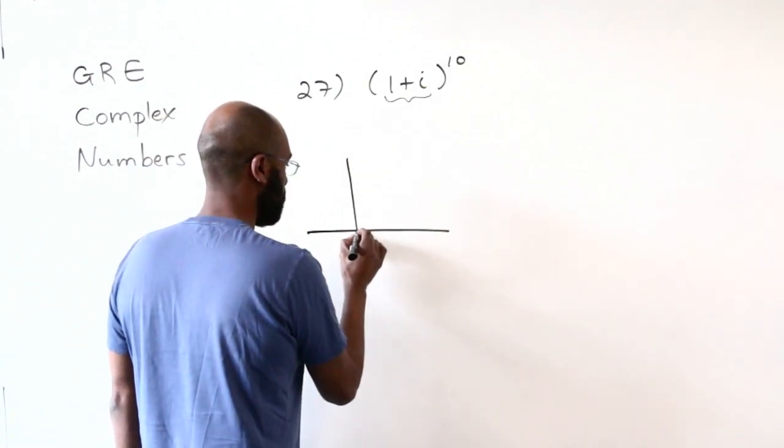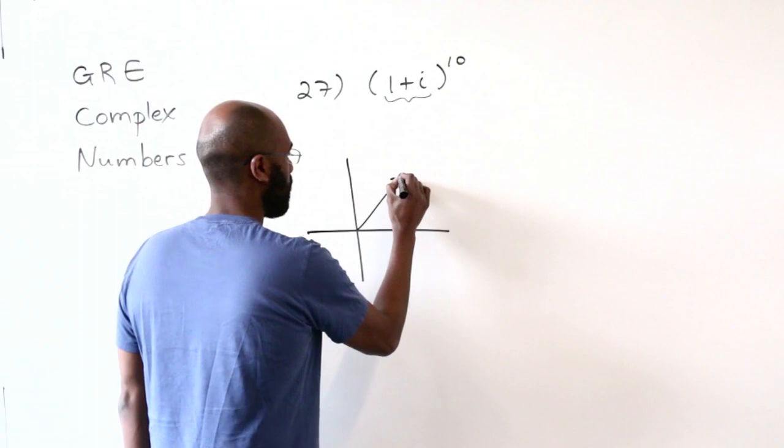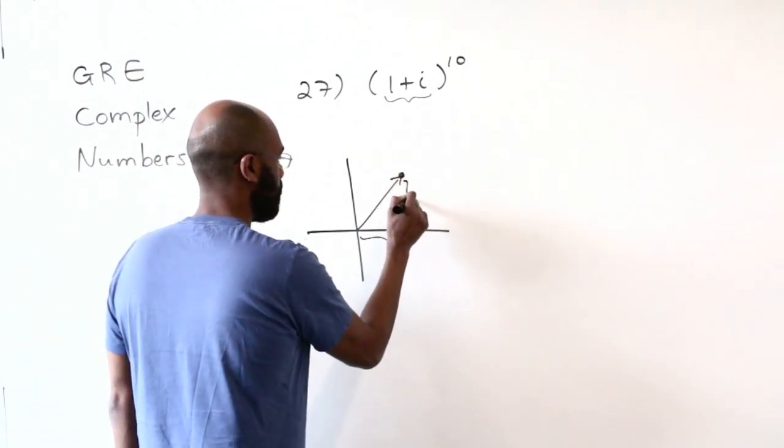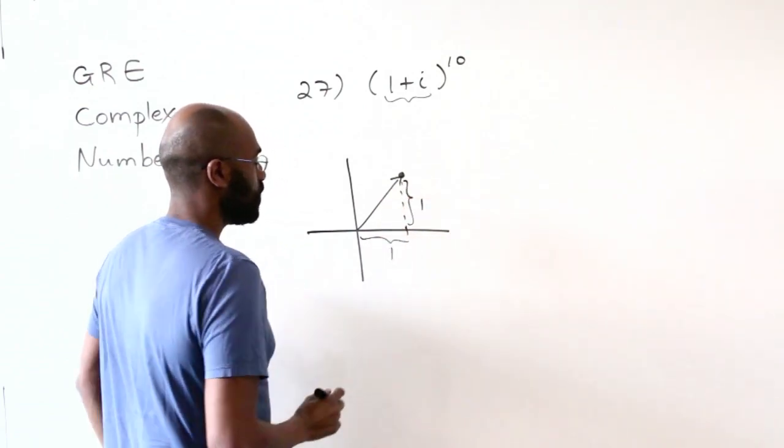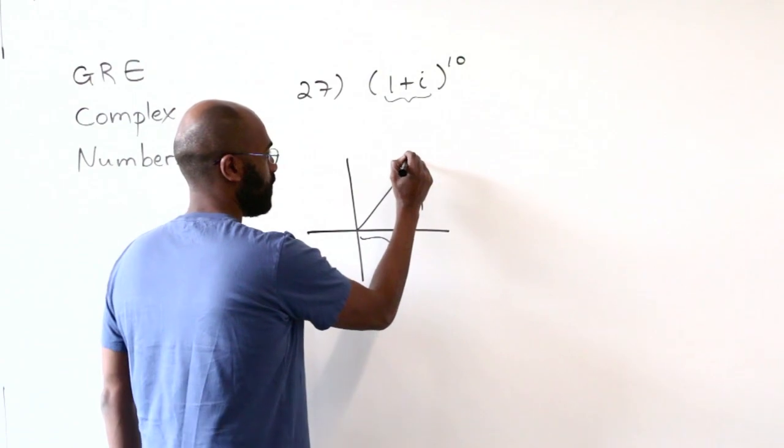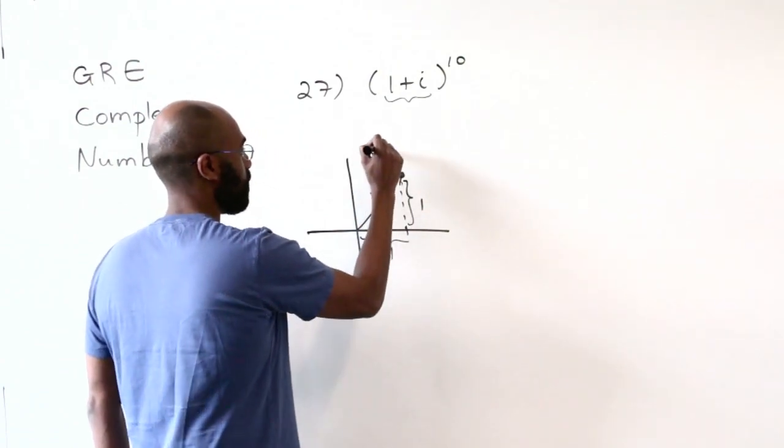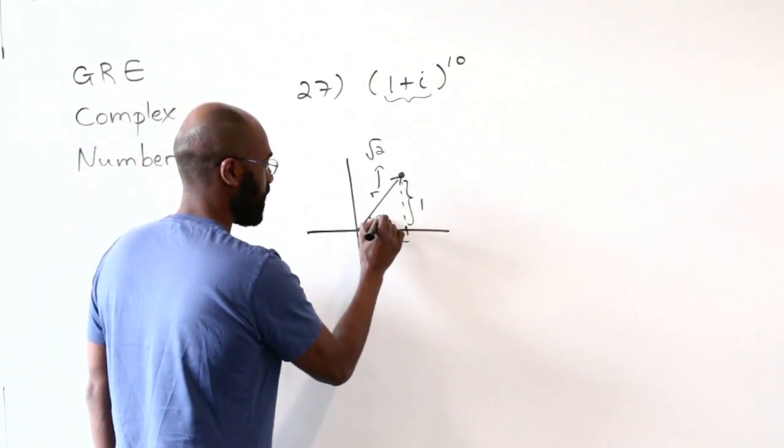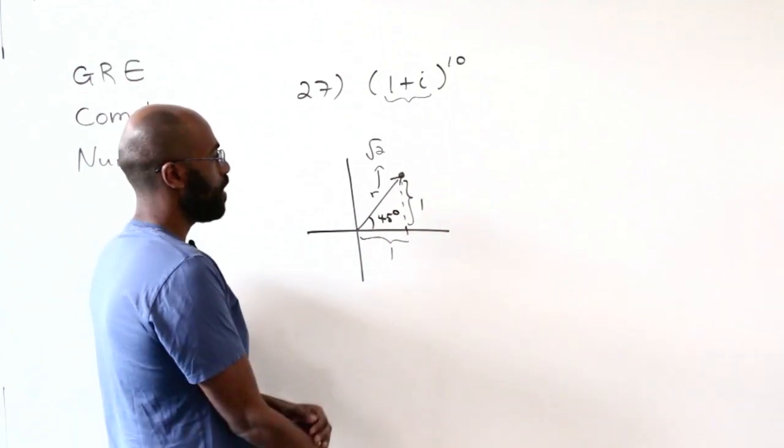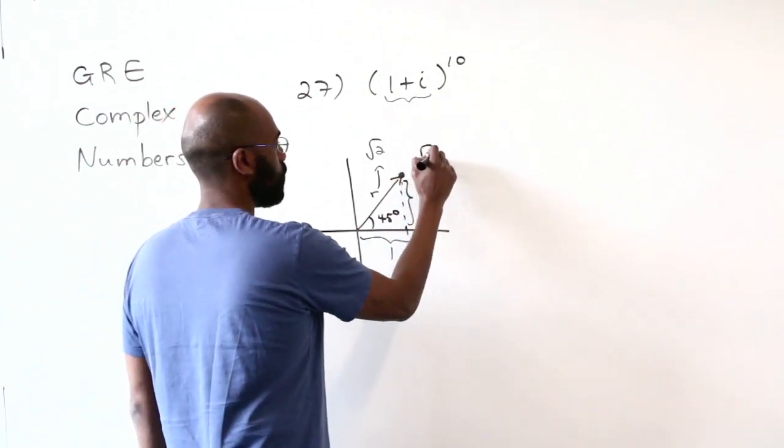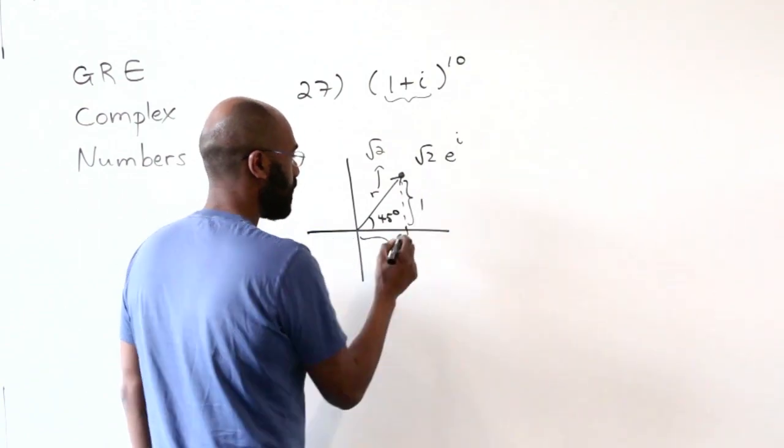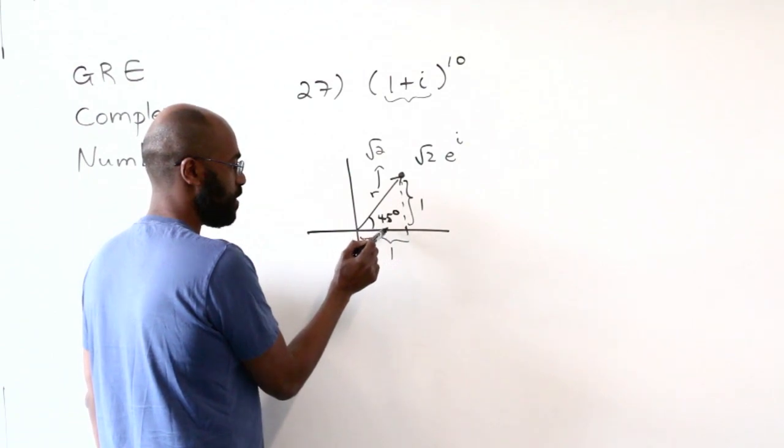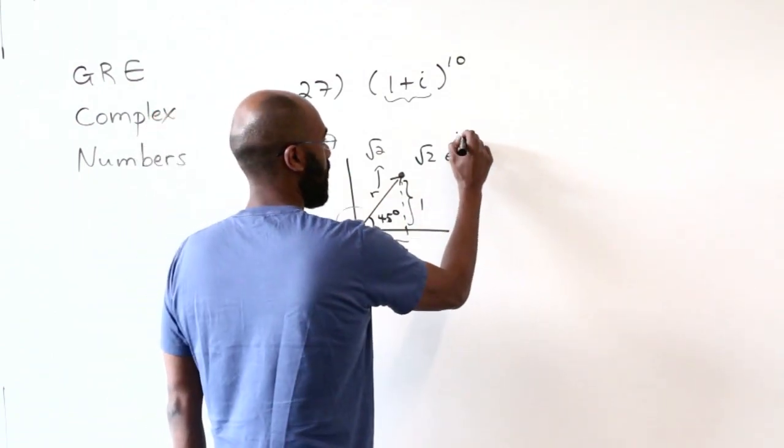So this complex number in the complex plane lives somewhere like right over here. We have a real part of 1 and an imaginary part of 1. So written in polar form, the length of this thing by the Pythagorean theorem is the square root of 2. And this angle right here, because these two side lengths are the same, is 45 degrees. So this thing in polar form is going to be the square root of 2 e to the i theta. And I'm going to write theta in radians, and the number of radians here is going to be pi over 4. So this is i pi over 4.